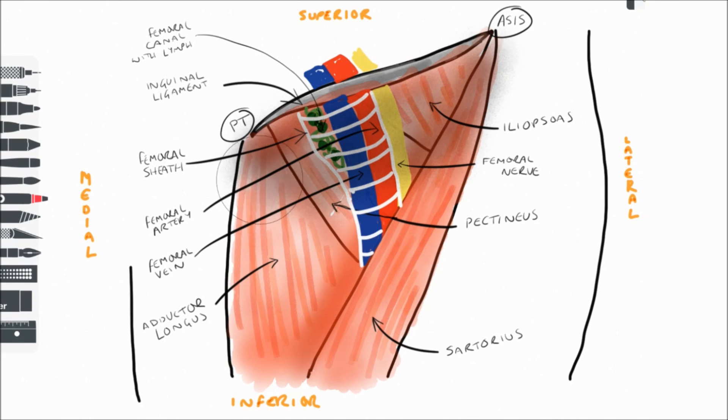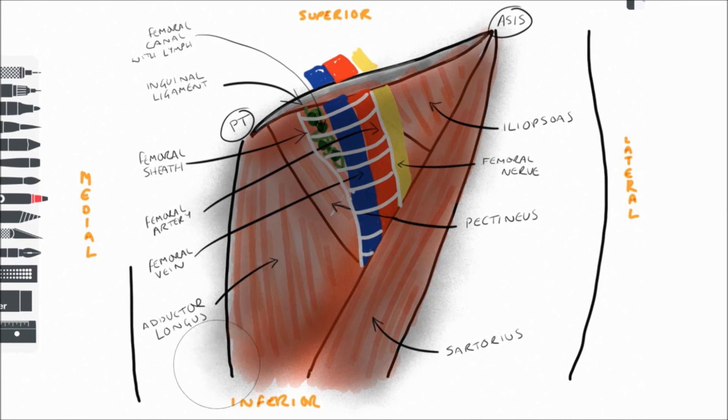Over the top of all this, forming part of the roof along with the skin and subcutaneous tissues, is the fascia lata, which is represented by this kind of grey area. Within this superficial tissue, the great saphenous vein can also be found heading towards the femoral vein and then eventually piercing through these fascial layers to drain into it.